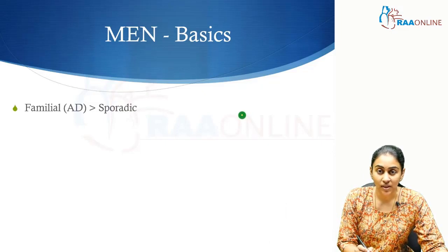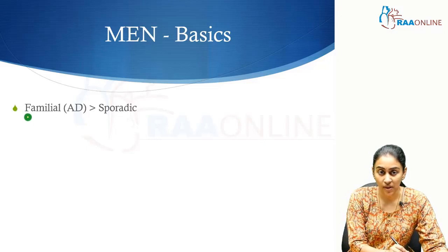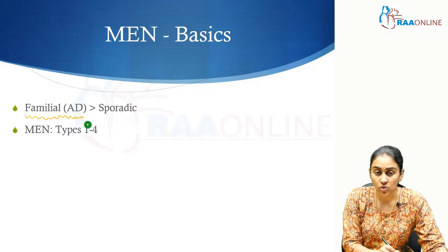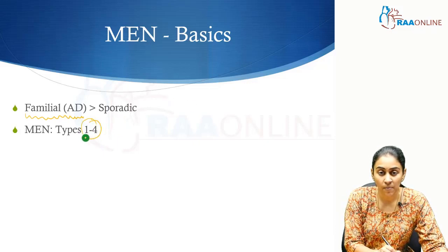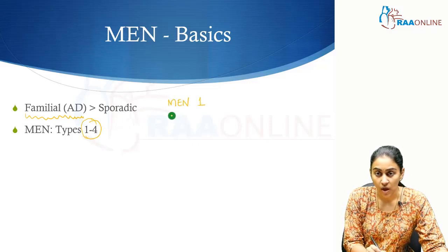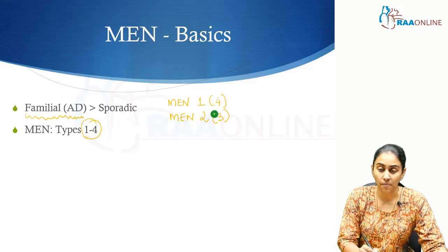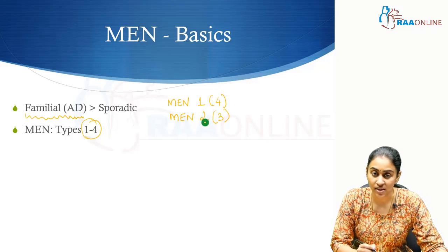Most commonly, most of the MEN syndromes are going to be familial, although few sporadic reports have been documented. Mostly there is going to be a very strong family history as all of them are autosomal dominant. There are four major types of MEN syndrome. Most of us would already be familiar with MEN 1 and MEN 2. MEN 3 is a part of MEN 2, and in a sense MEN 4 is a part of MEN 1. We will understand about them slowly as the session progresses.